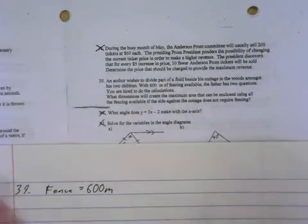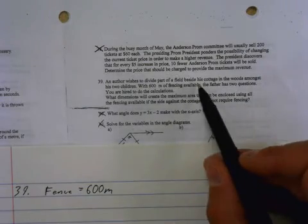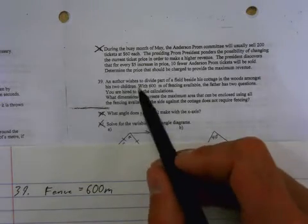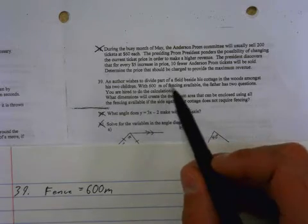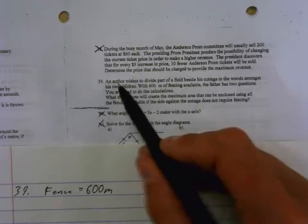Alright, 39's confusing. An author wishes to divide part of a field beside his cottage in the woods amongst his two children. With 600 meters of fencing, the father has two questions. Did they mean the author, or is the author a father?